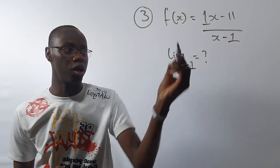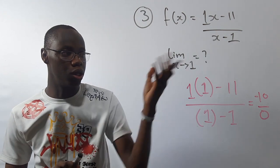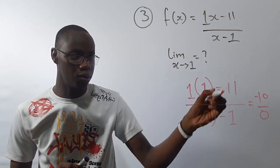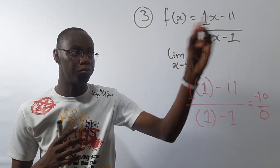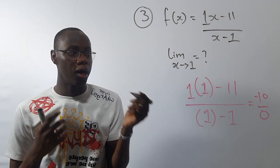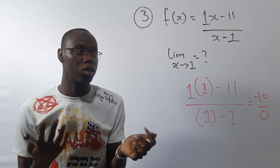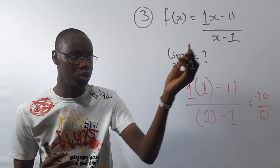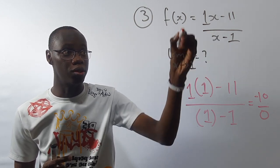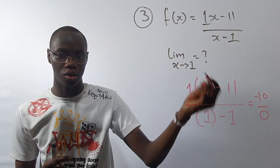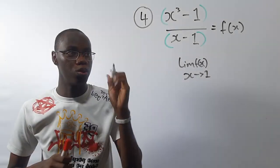Let's try another example. We have a limit of f(x) as x tends towards 1. If you directly substitute, the denominator equals zero — so direct substitution fails. If you try to factorize or manipulate the expression and there's nothing you can do to cancel, then the limit as x tends towards 1 does not exist for this function. You still need to show why it's undefined — write it down and demonstrate that it gives an undefined result.